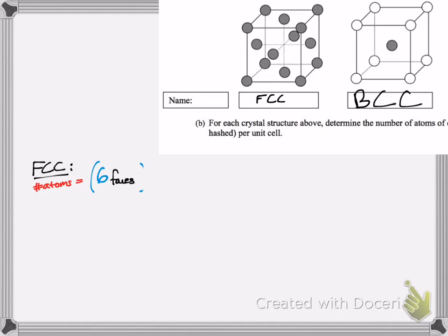so pretend they're in 3D, you have a sphere, cut it in half, half of it is being shared by a cube next to it, the other half is the one we're looking at. So there's six faces, and that's half an atom.